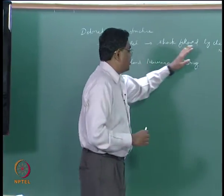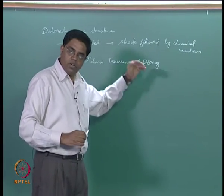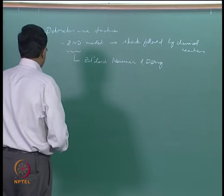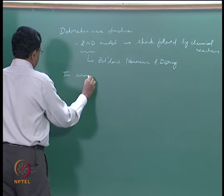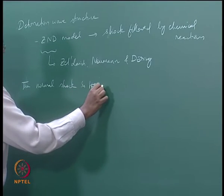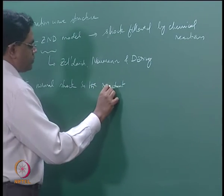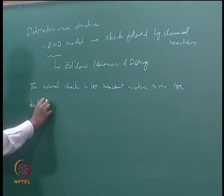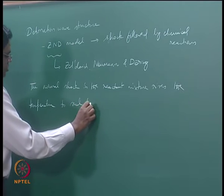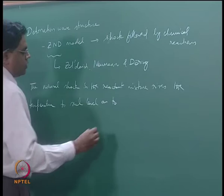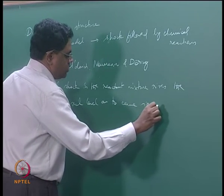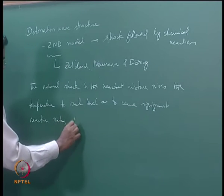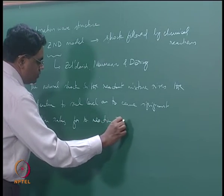We will see how this approximation can be relaxed as we discuss further, but within the framework of the ZND model the essential approximation is: first you have a shock, and then you have chemical reactions. The normal shock in the reactant mixture raises the temperature to such a level as to cause significant reaction rates, enabling the reaction zone to follow the shock.